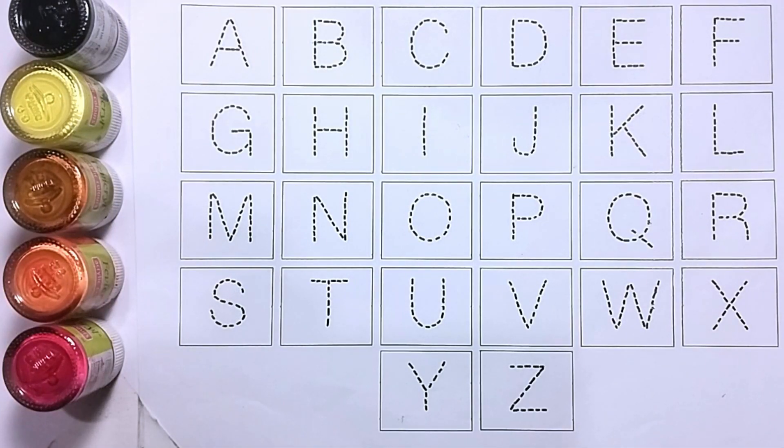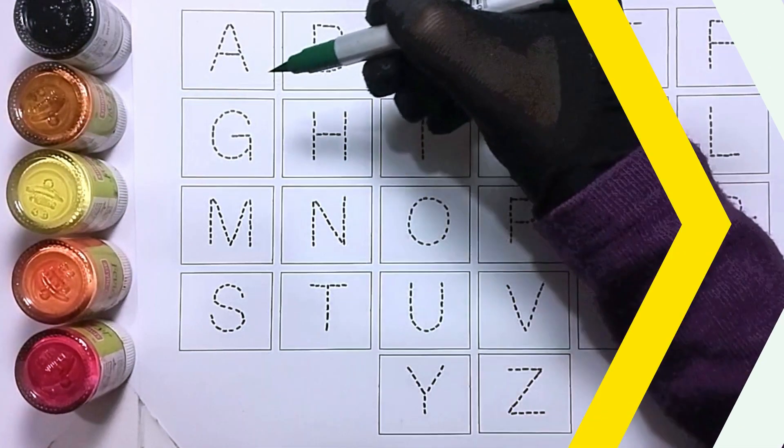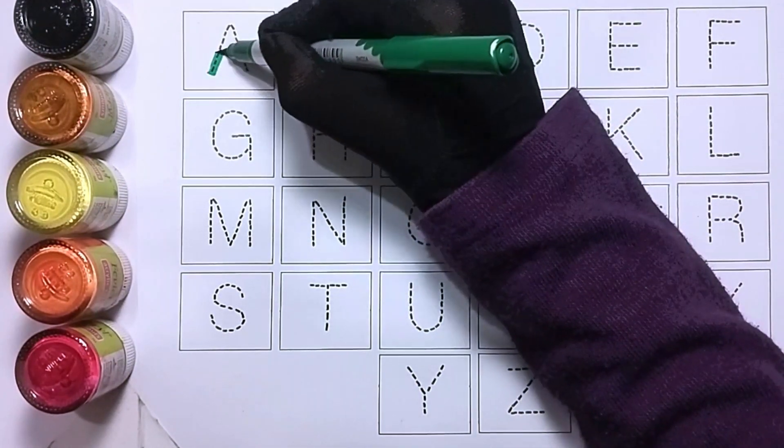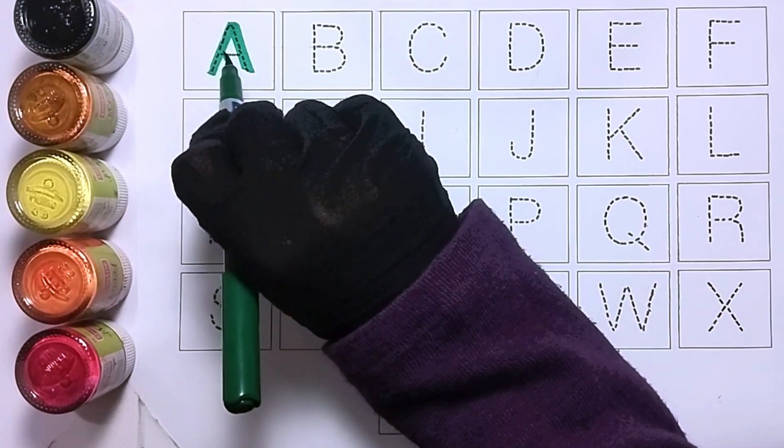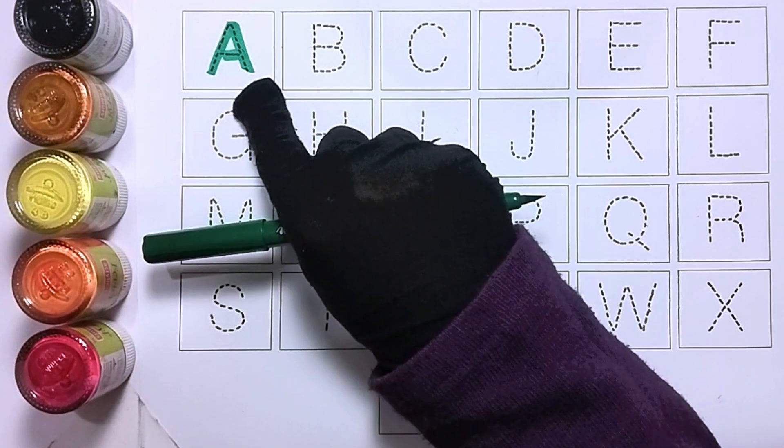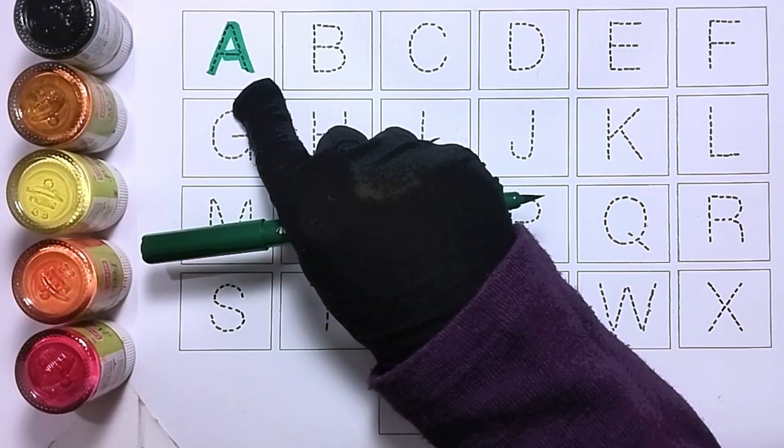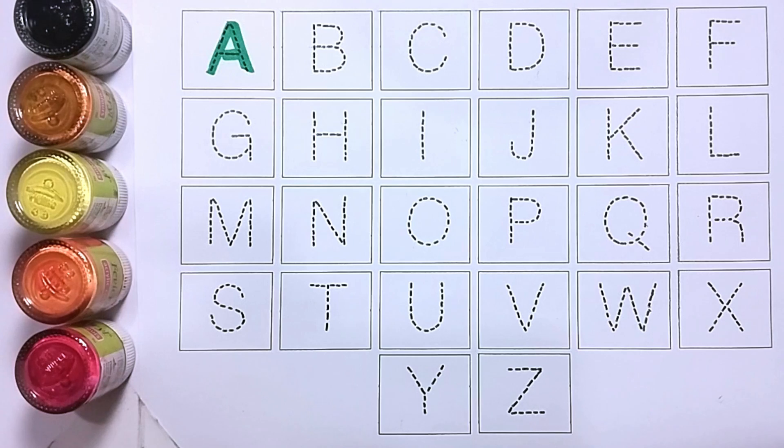So kids, let's start the video. Green color. A, A for alligator, A for alligator.